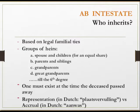John passes away and didn't execute a will. We need to know who are his heirs. The law gives us guidelines and says we're going to look at the legal family ties. We look at a group of heirs — there are four groups. We always start with group number one, or A, which is spouse and/or children.